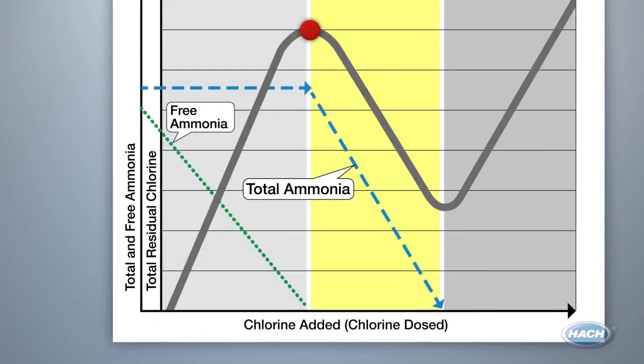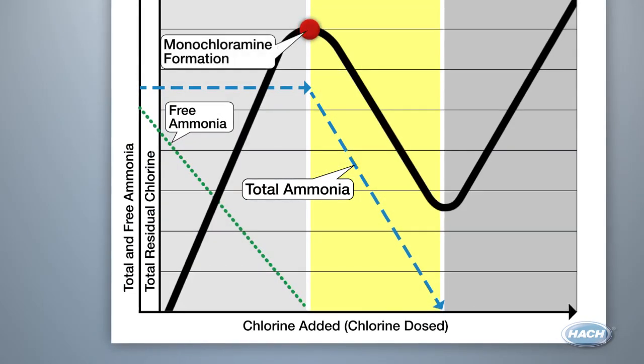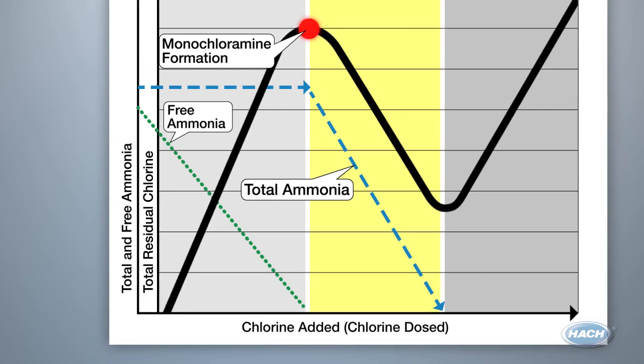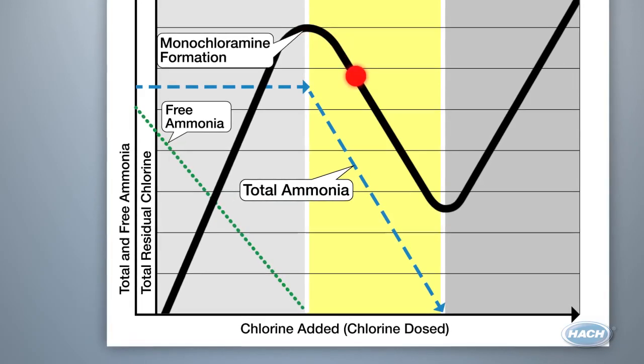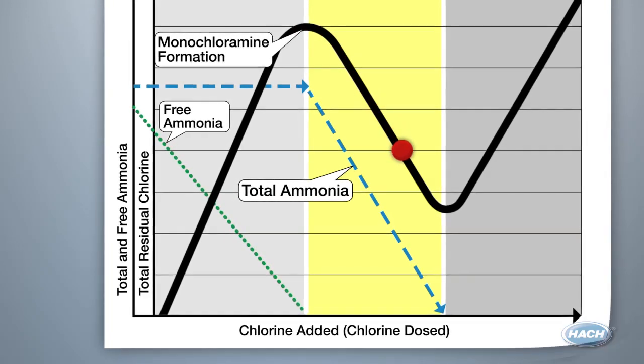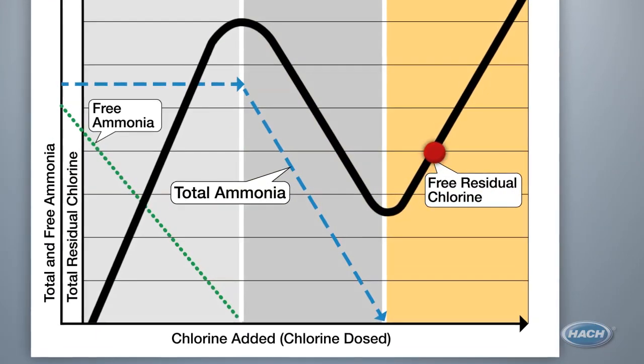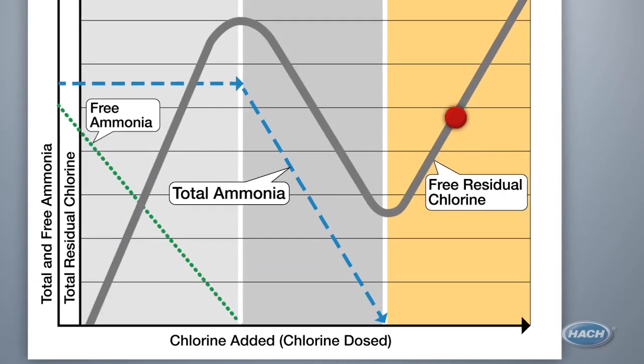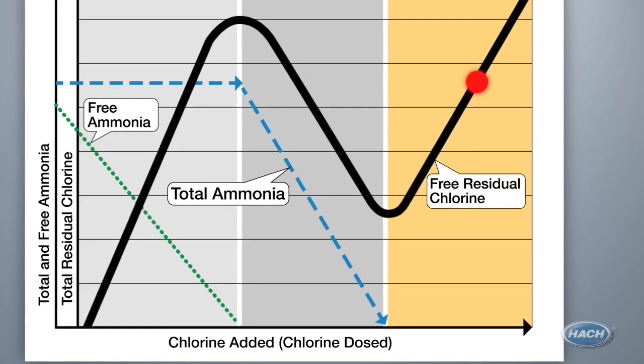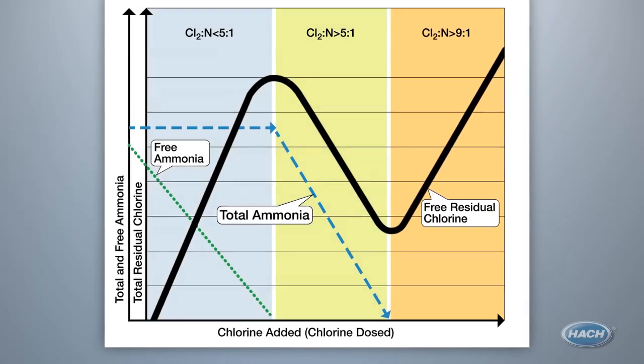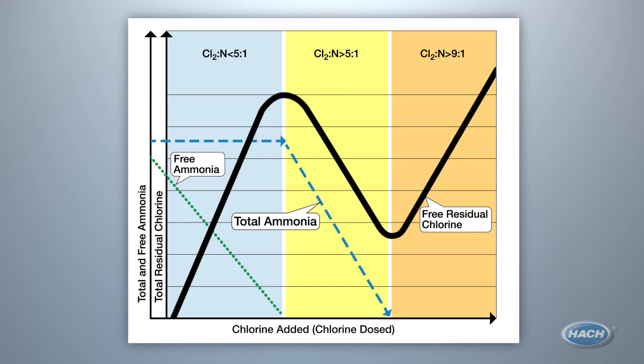In zone two, you will see total chlorine, monochloramine, total ammonia, but no free ammonia. In zone three, you will see no ammonia and only chlorine, and your free and total chlorine values should be very similar or match. If you know the key parameters to look for in each section, it is easy to determine where you are on the chloramination curve.